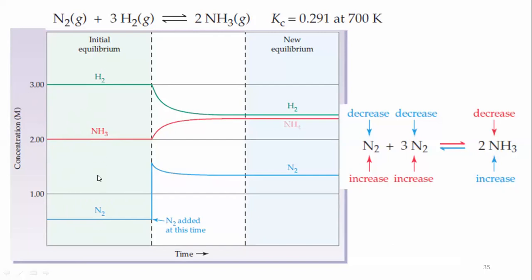The reaction is at equilibrium, meaning when you substitute these concentration values, you get the equilibrium constant 0.291. Now I am going to apply stress on the reactant side by adding nitrogen gas. If N₂ is added at this point while the system is at equilibrium, the concentration of N₂ increases from 0.5 to 1.5.